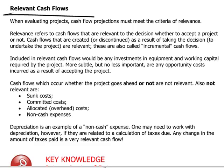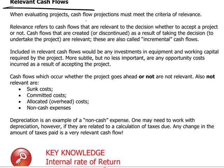Perhaps it's easier to define relevance in the negative: cash flows which are going to occur anyway, whether or not our project goes ahead, are considered irrelevant. For example, if we've done a marketing study for a given project, once the money has been paid for that study it is essentially a sunk cost. Therefore, whether we paid one million dollars or one hundred thousand dollars, that's not going to enter into the calculation of whether we should embark on the project. Committed costs similarly are not relevant, as are allocated costs.